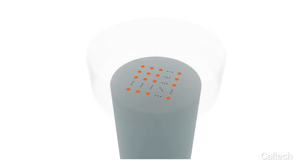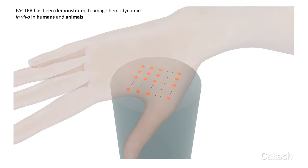PACTER has been demonstrated to image hemodynamics in vivo in humans and animals, such as the changes in the blood vessel of a human hand.